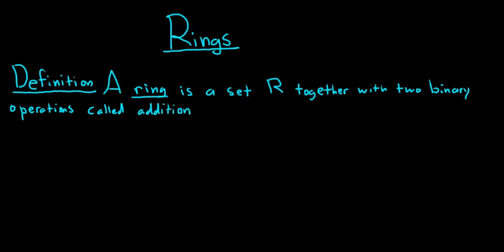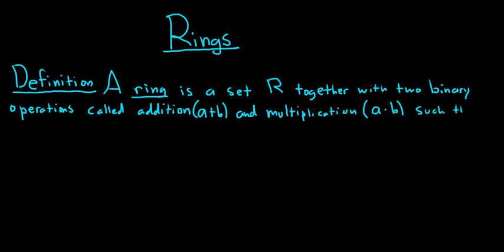For addition, we'll use the regular plus sign. Given elements a and b in R, we denote the sum by a plus b. For multiplication, given two elements a and b, we denote the product as a dot b. Sometimes the dot can be omitted, but the plus sign is always used. A ring is a set R together with two binary operations called addition and multiplication, such that the following conditions hold.